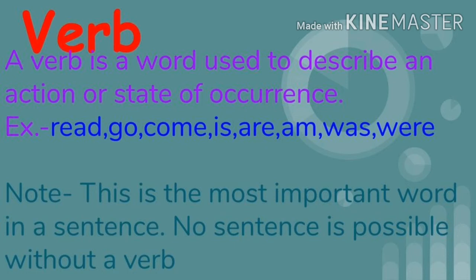Now, the next one is verb. A verb is a word used to describe an action or state of occurrence. Examples: read, go, come, is, are, am, was, were — these are verbs. Note: this is the most important word in a sentence. No sentence is possible without a verb. In simple words, from morning till evening, everything we do — all those actions are verbs.